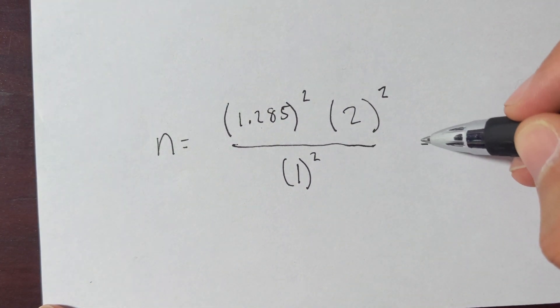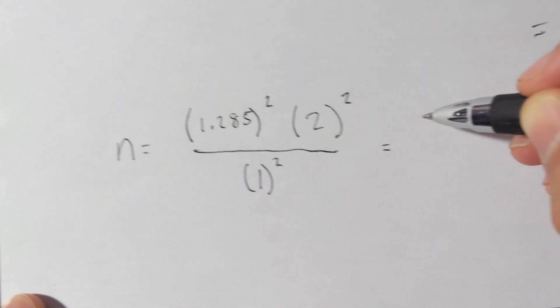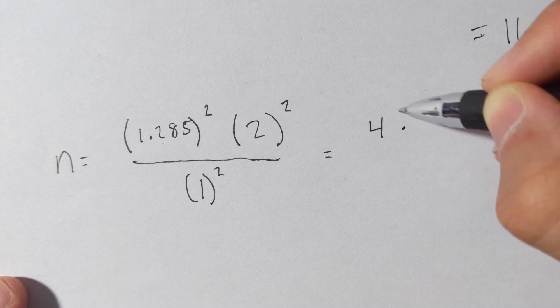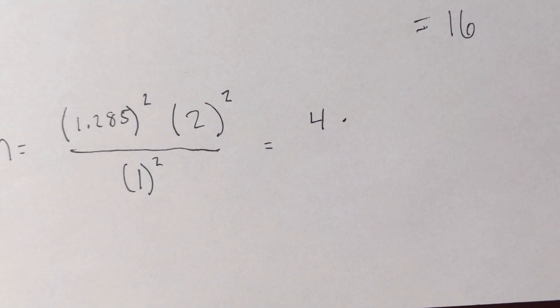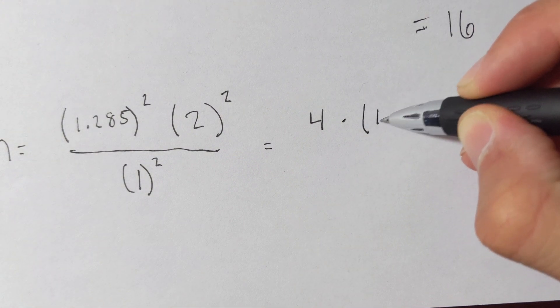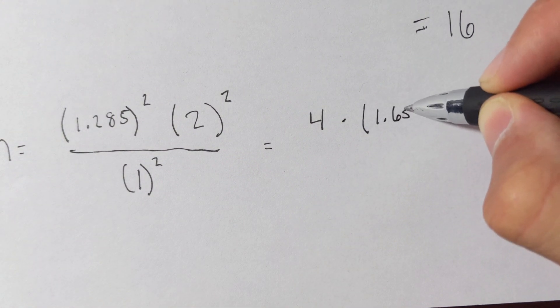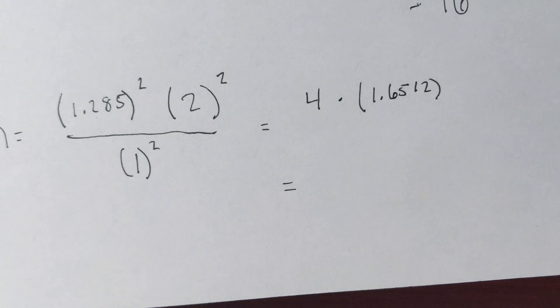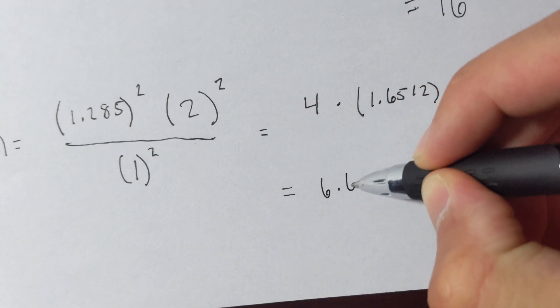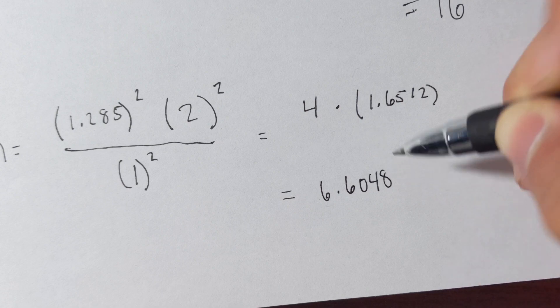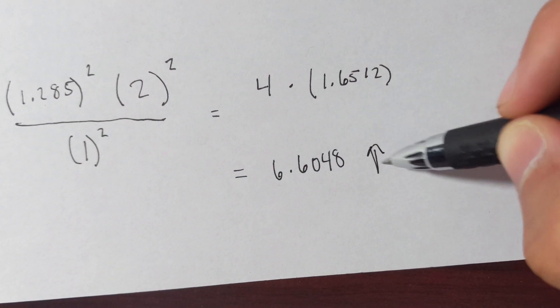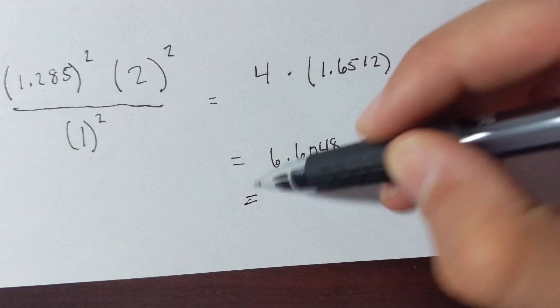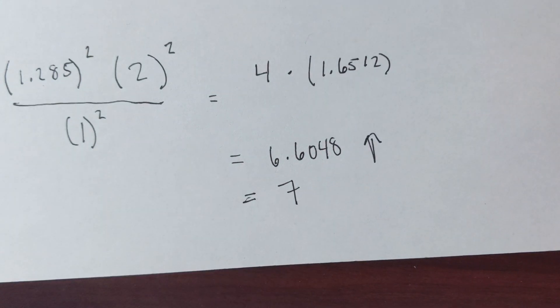Well, we know this is going to be 4 over 1 times whatever that is. So 4 times 1.6512. And that is equal to 6.6048, which again, we know we need to round up because you can't weigh 0.6048 of a puppy. So in order to get the accurate results, we have to round up to 7.